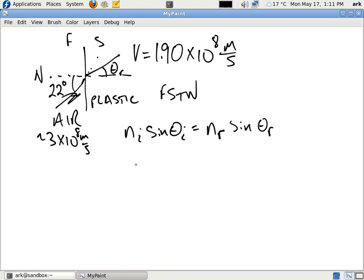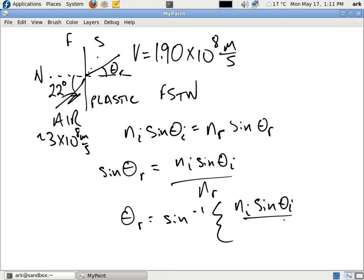Now, what we're looking for is theta r. So therefore, we can say theta r, at least sine theta r, is equal to Ni sine theta i divided by nr. But we want the angle, not the sine of the angle. So therefore, we have to take the inverse sine of both sides. And that's the equation that we end up with.